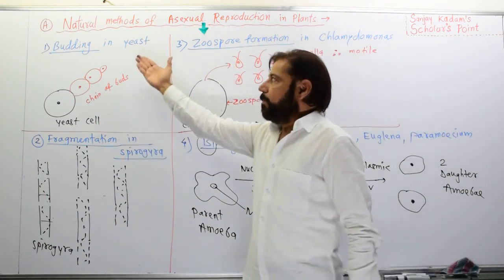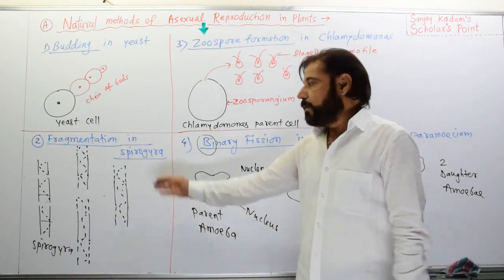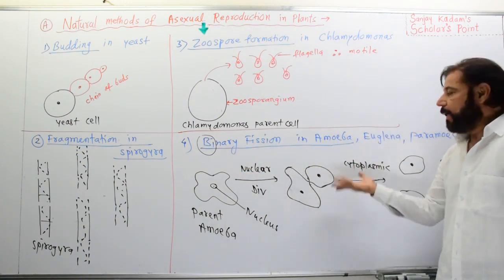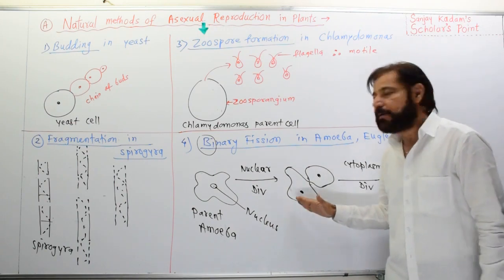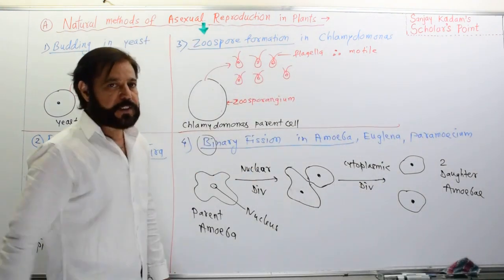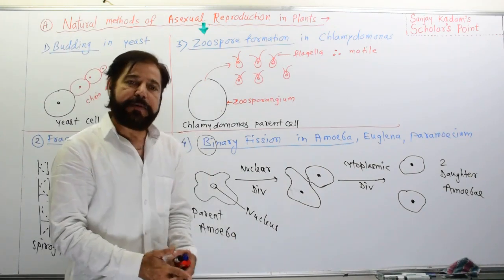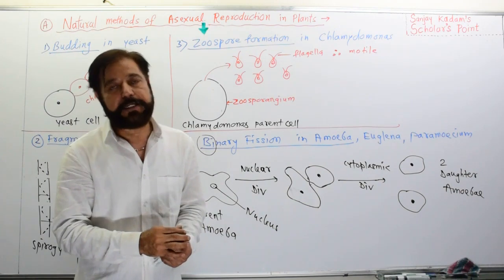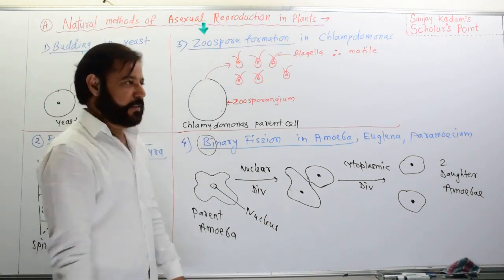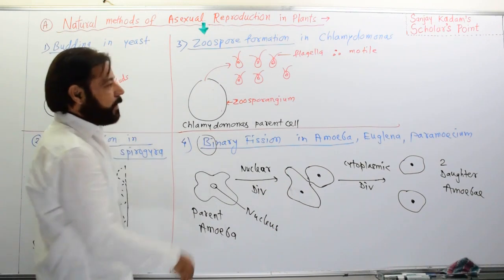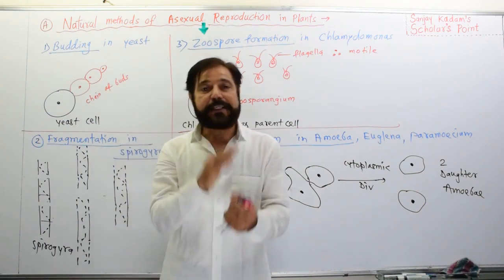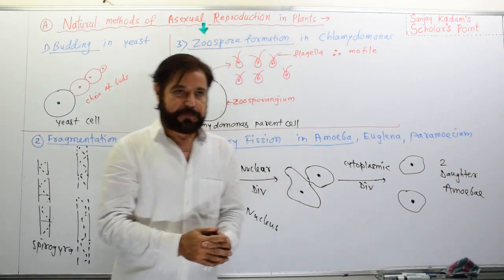To summarize, we learned about four types of natural methods of asexual reproduction: budding in yeast, fragmentation in Spirogyra, zoospore formation in Chlamydomonas, and binary fission in Amoeba. Euglena has longitudinal binary fission while Paramecium has transverse binary fission. Plasmodium and Amoeba also undergo multiple fission, producing many new organisms of small size. In asexual reproduction, organisms reproduce rapidly compared to sexual reproduction.